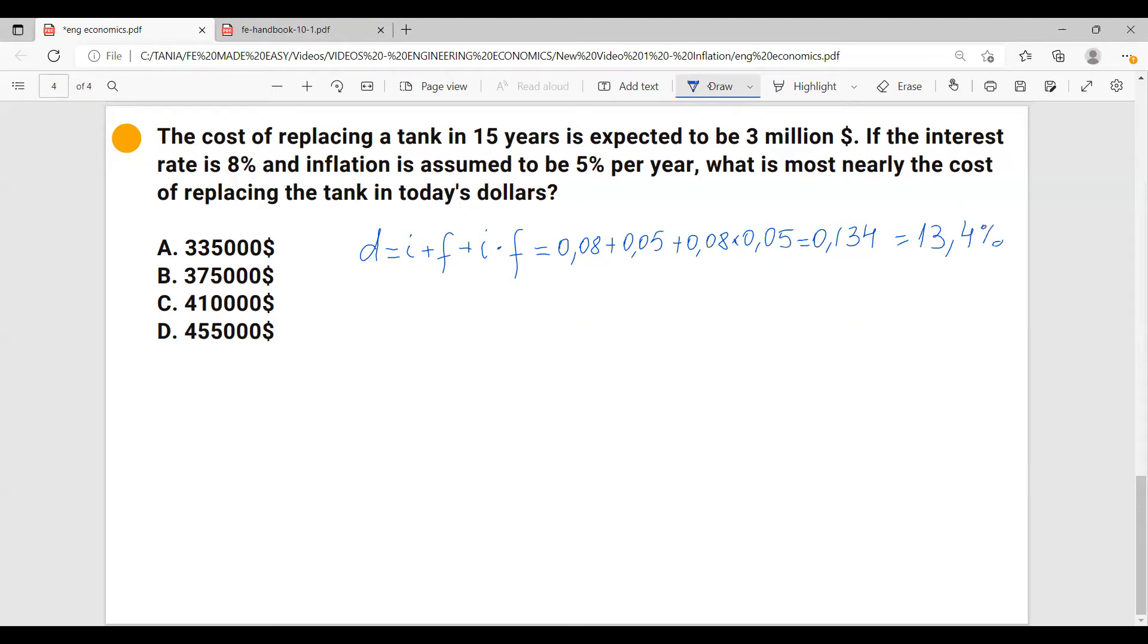And now if you look at the problem, we are given $3 million, which are future money. This is going to be the cost of the tank in 15 years. So we have $3 million. The number of years is 15. And we have the interest rate. So this problem comes up to a matter of converting a future amount of money to the present.